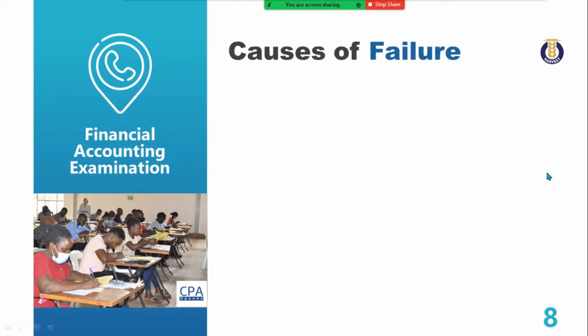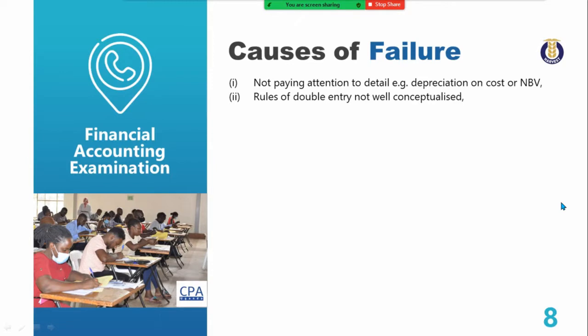Now for the causes of failure. The very first cause is not paying attention to detail. For example, a question could say depreciation is to be charged on cost, yet you find yourself charging the depreciation rate on the net book value. You must pay attention to detail. Second, rules of double entry not well conceptualized — this paper is filled with double entry, so ensure you have clearly understood those rules. Third, use of incorrect formats has been one of the largest causes of failure.